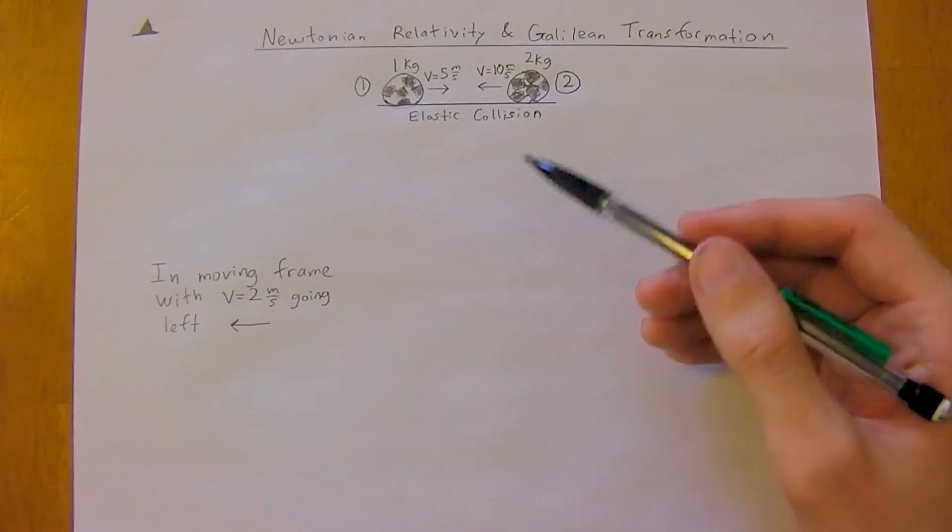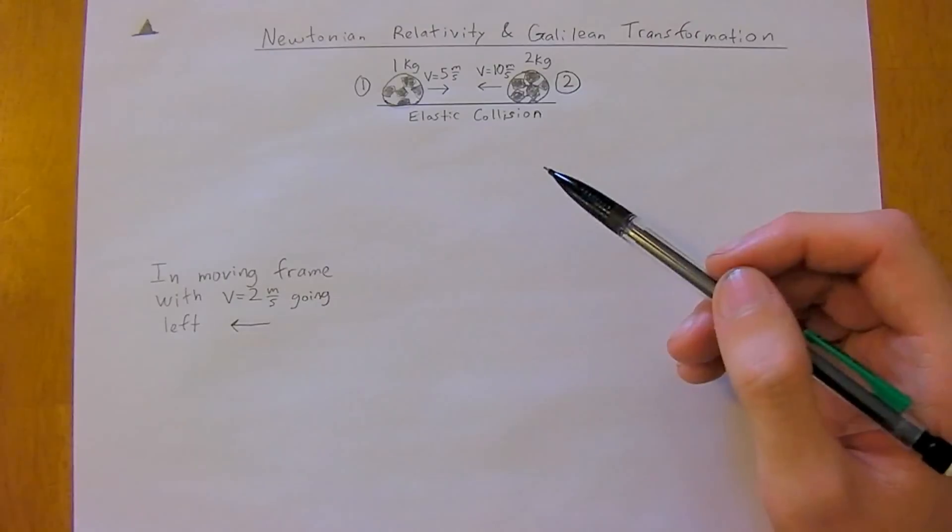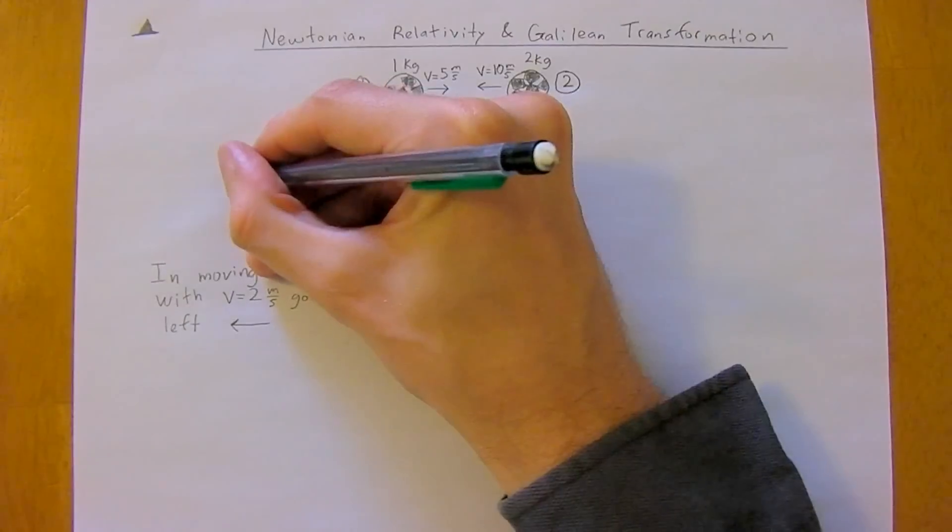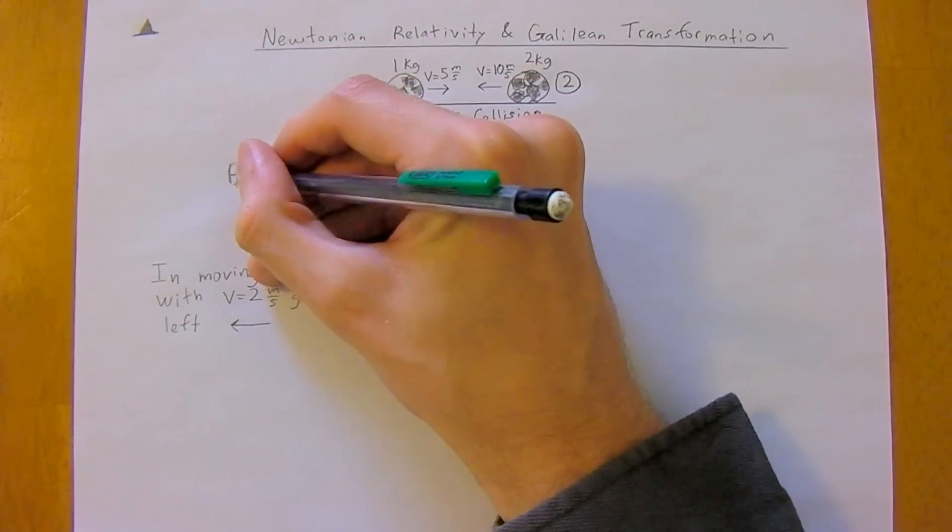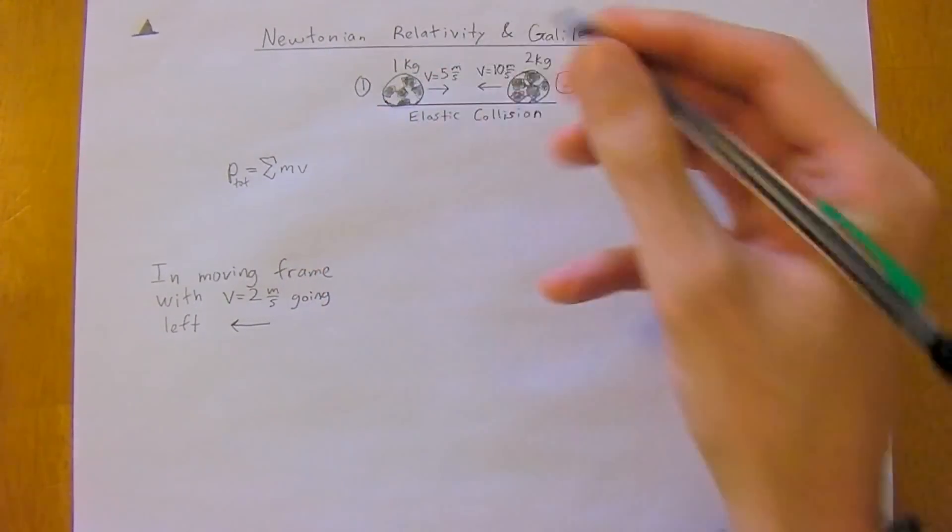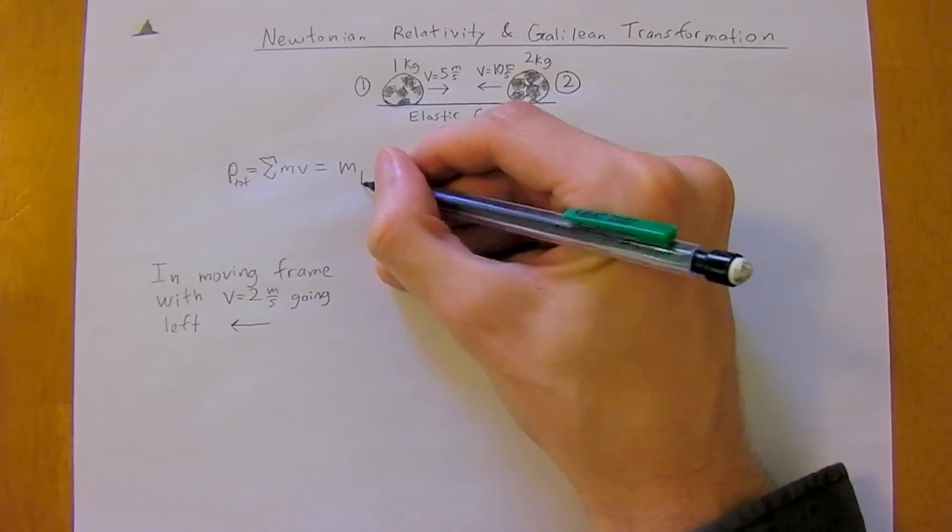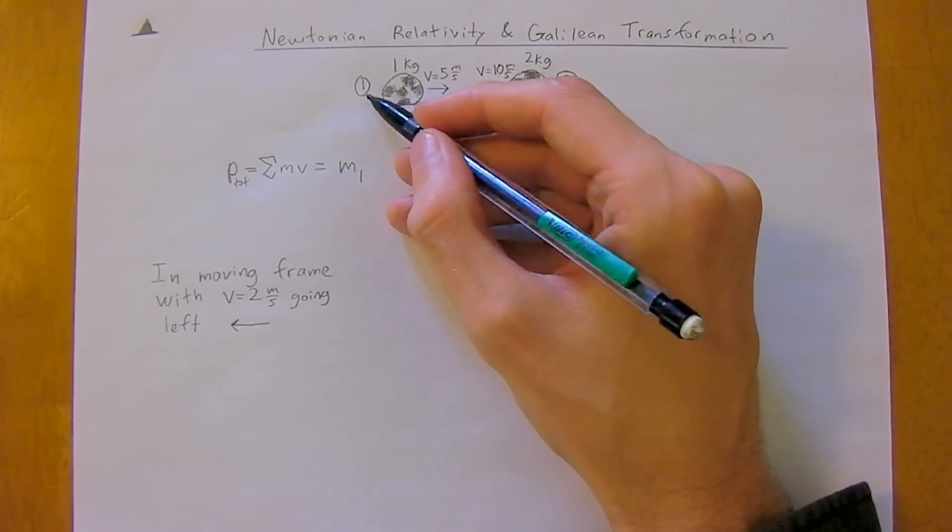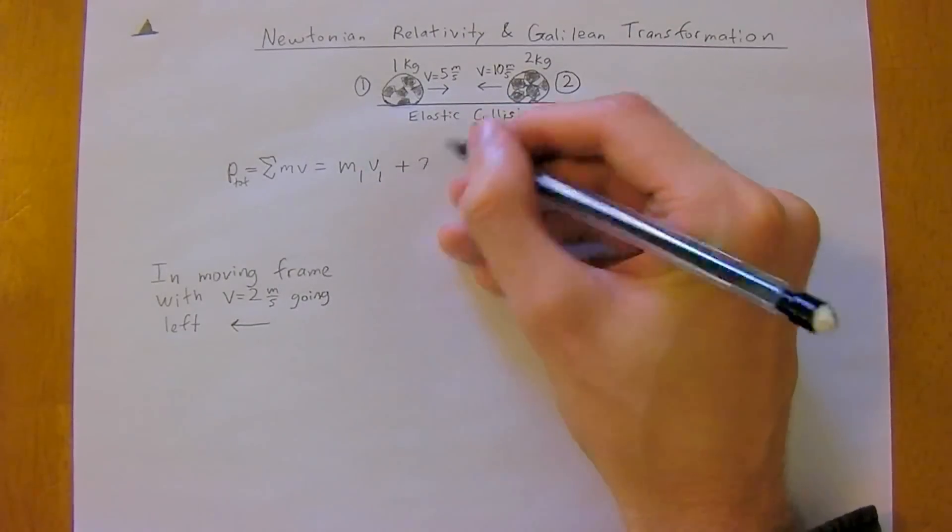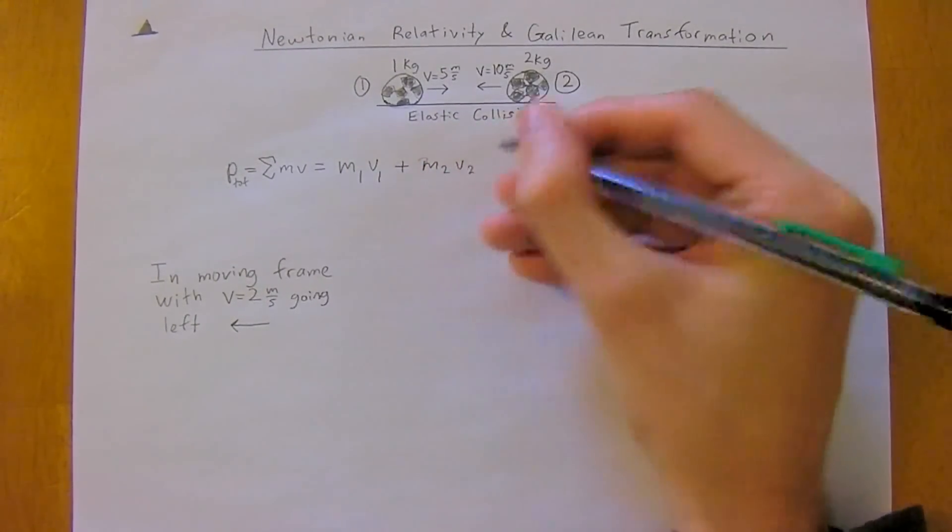So in our first case, we're asked to figure out the momentum of an elastic collision between these two soccer balls. And that's a pretty straightforward calculation. So you remember that momentum total would just be equal to the sum of mass times velocity. And so that is the mass of the first soccer ball, denoted by the one, times the velocity of the first soccer ball, plus the mass of the second soccer ball times the velocity of the second soccer ball.